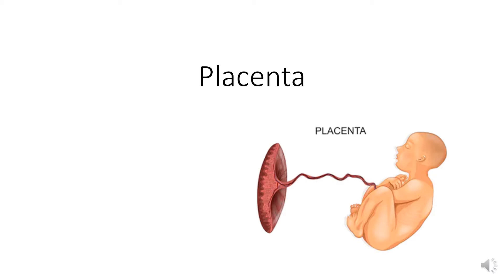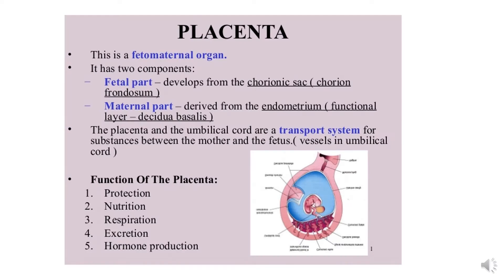Today our topic of discussion is the placenta. Placenta is an organ characteristic of true mammals during pregnancy. It joins the mother and the offspring, allowing the selective exchange of soluble blood-borne substances by apposition of uterine and trophoblastic tissues. Literally, the placenta means 'the cake,' a title based on the flat discoid appearance of the freshly delivered placenta.